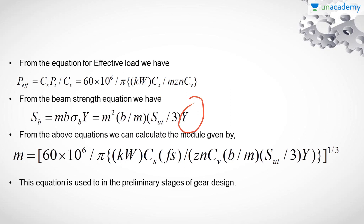From the above two equations we can calculate the module which is useful for avoiding failure due to bending loading acting on the gear tooth. That is given by M equals [60×10⁶ divided by π, multiplied by KW·CS·FS, divided by Z·N·CV·(B/M)·(SUT/3)·Y] to the power of 1/3.